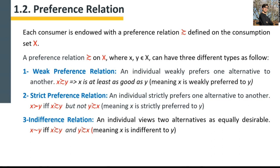In weak preference relation, an individual weakly prefers one alternative to another. Like: x is weakly preferred to y. We define this notation by saying x is at least as good as y, meaning that x is weakly preferred to y.